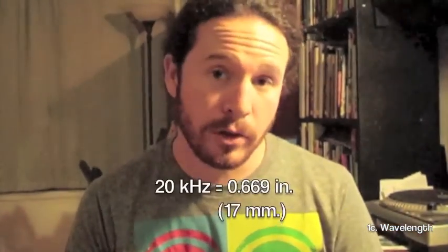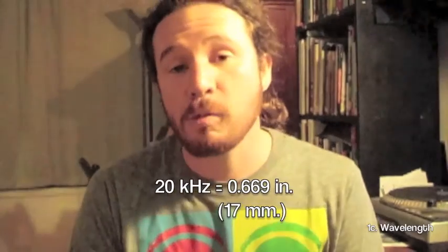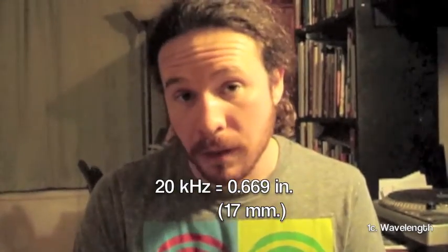So just to put it in perspective, a frequency of 20 hertz is going to have a wavelength of about 54.8 feet. That's massive. That's a lot of air to move for one wave. On the other end of the spectrum, a frequency of 20,000 hertz or 20 kilohertz is going to have a wavelength of about two thirds of an inch. So that's a pretty wide range from two thirds of an inch for 20,000 hertz to 54.8 feet for 20 hertz.